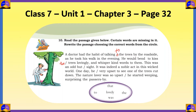Third blank: 'This was an odd but [dash] sight.' Here, 'sight' is a noun, and the blank requires an adjective to describe that noun. The only adjective in the circle is 'lovely,' so the answer is 'lovely.' The sentence reads: 'This was an odd but lovely sight.'